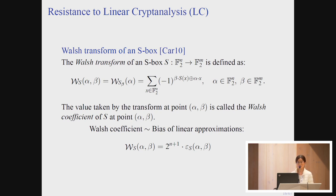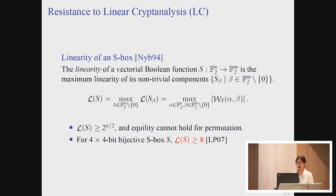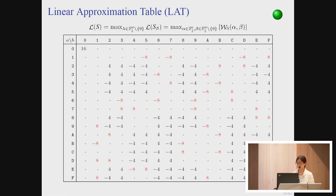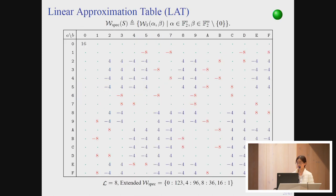For resistance to linear cryptanalysis, the Walsh transform and Walsh coefficients are important criteria, as the Walsh coefficients relate to the bias of linear approximations. The table formed by the Walsh coefficients is the linear approximation table (LAT). The maximum absolute value in this table is defined as the linearity, and we prefer S-boxes with small linearity. The frequency of the maximum in the LAT and the full Walsh spectrum can also distinguish S-boxes with the same linearity. Given an S-box, Pagan evaluates and outputs the Walsh spectrum.